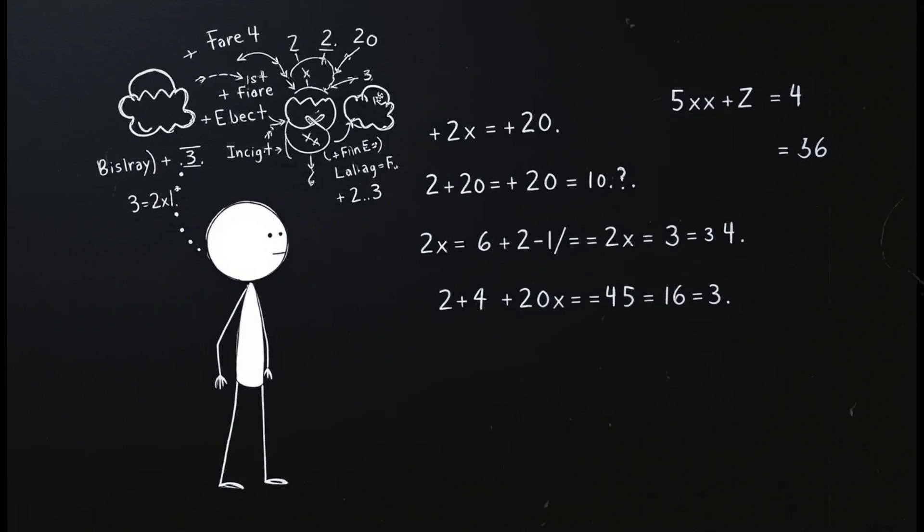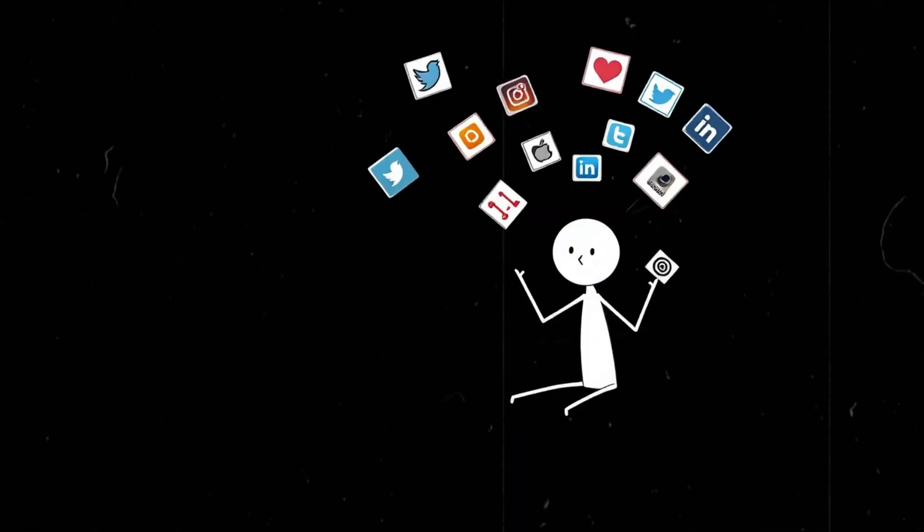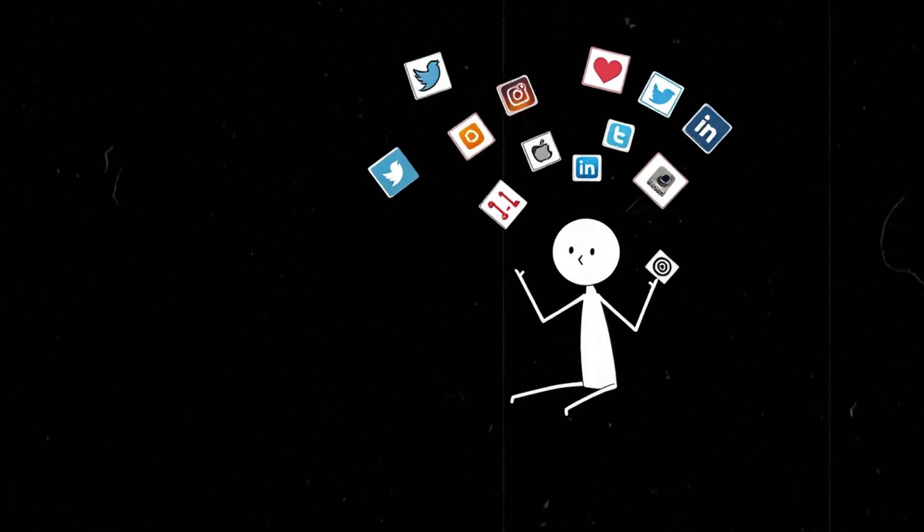Well, unless we crack the mystery of wormholes or discover some hidden loophole in physics, it looks like history is staying exactly as it is. Which, honestly, might be for the best. Because let's face it, humans are barely responsible enough to handle social media. Do we really trust ourselves with time travel?